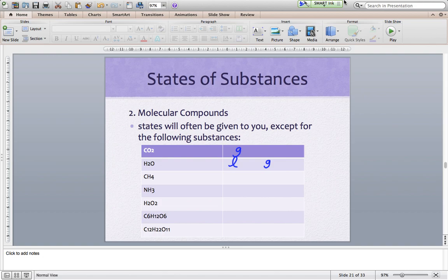Next, we have CH4, which is methane. Methane is a gas, and so is ammonia, a gas. H2O2, that's hydrogen peroxide. We generally find that as a liquid.